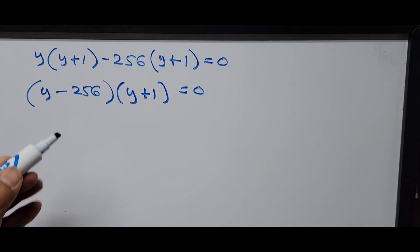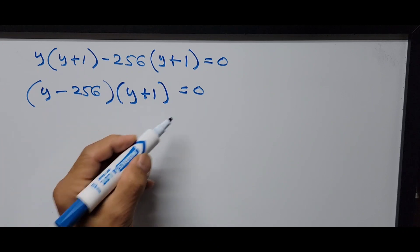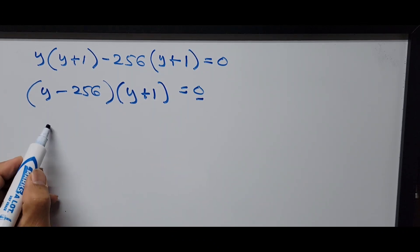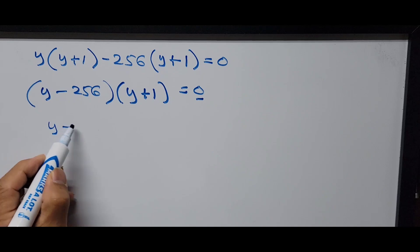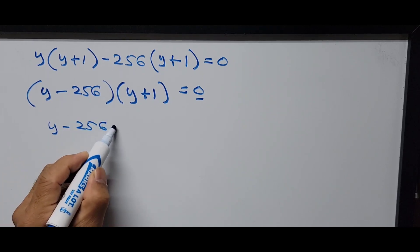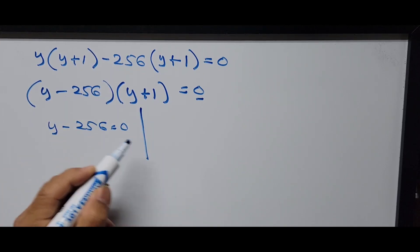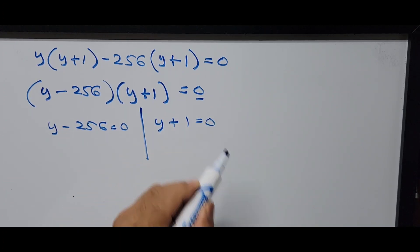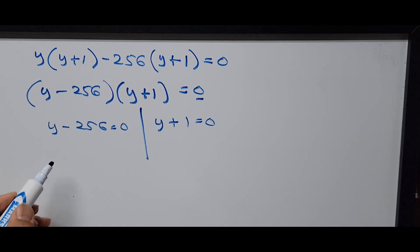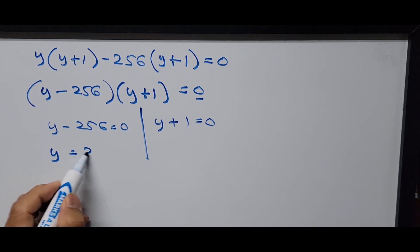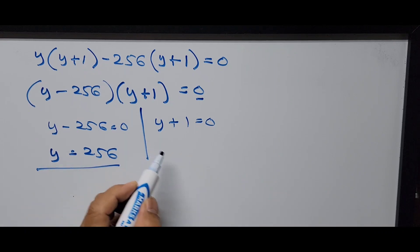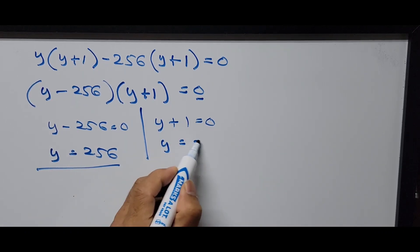Now we have two binomial factors, and we're equating each binomial to 0. So this is now y minus 256 equals 0, and the other side is y plus 1 equals 0. And from here, simplifying these equations, y equals 256, and from the other side, y equals negative 1.